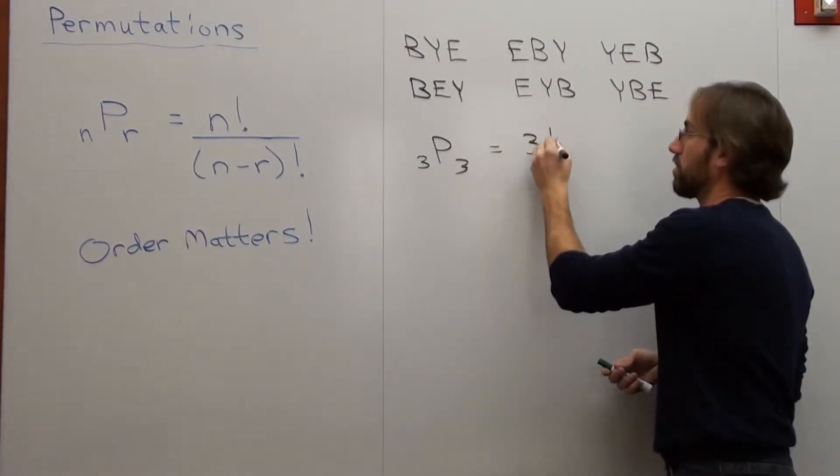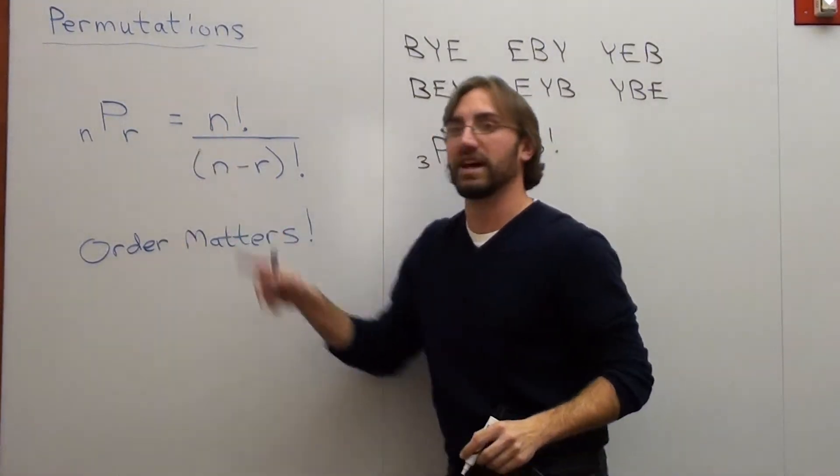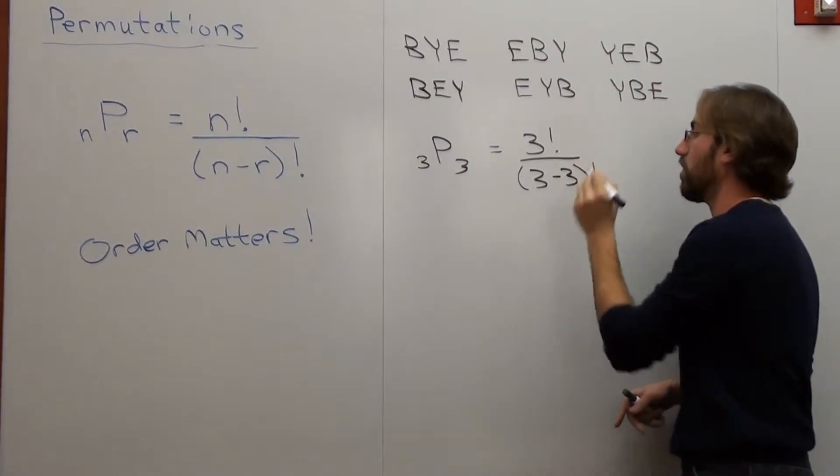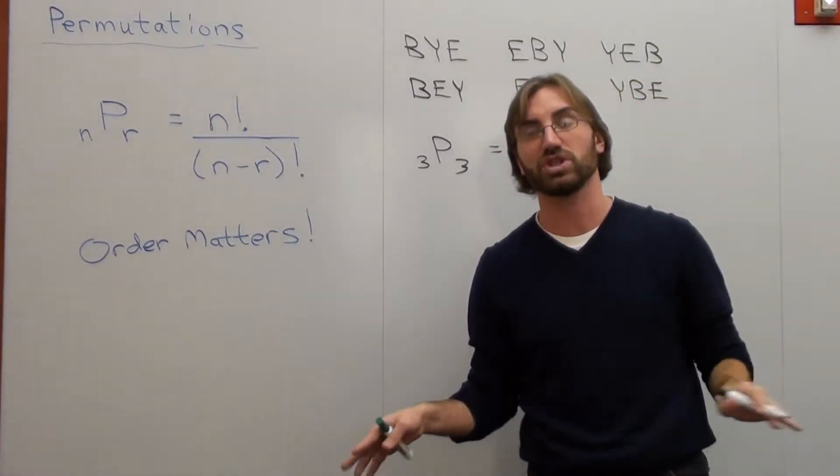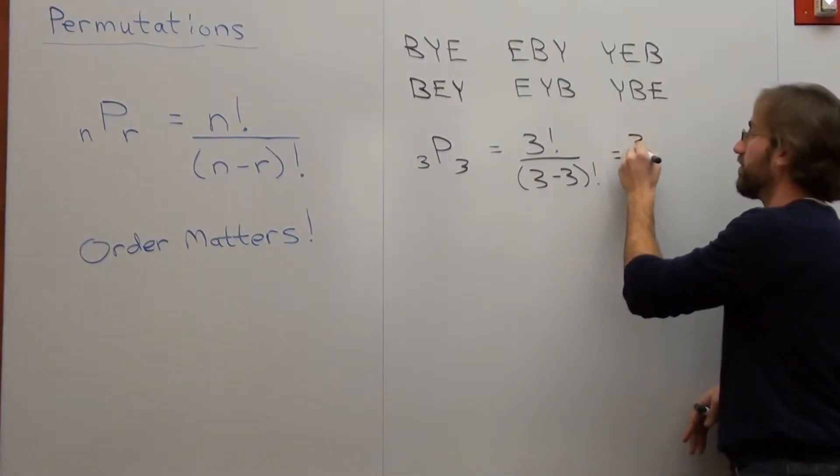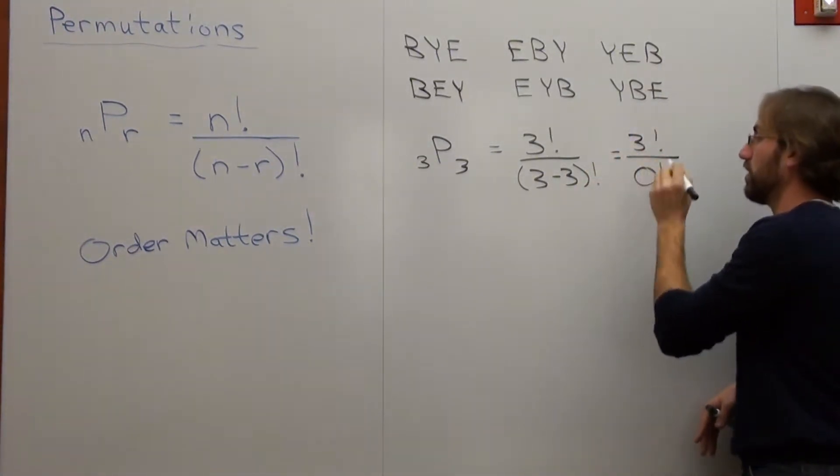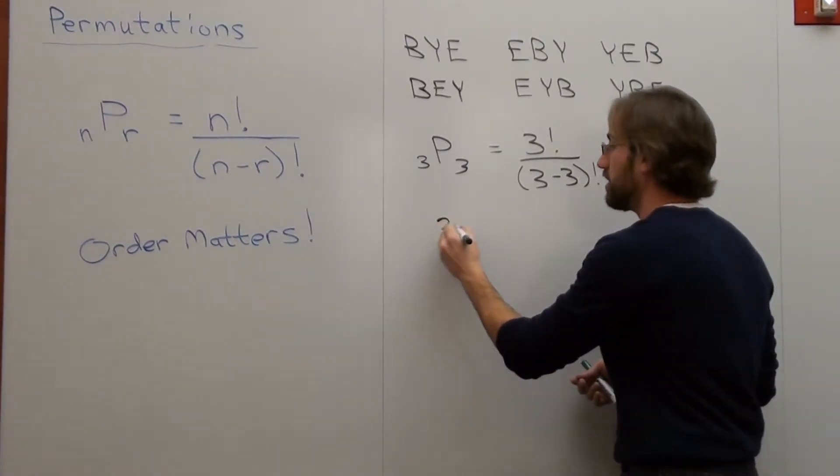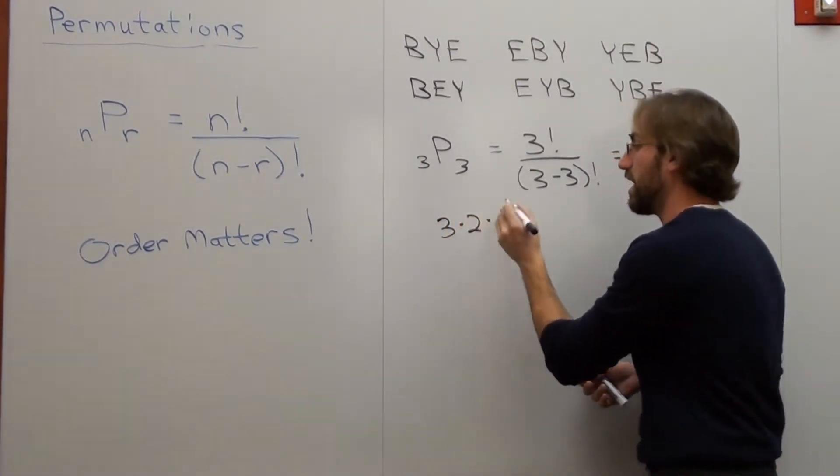I'm writing this out. It's three factorial, because the N is on top, over three subtract three factorial. For all intents and purposes, zero factorial is just one. So this is three factorial over zero factorial, which is just one.